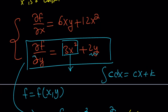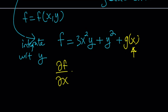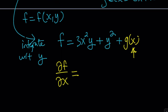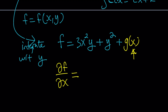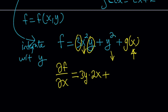So f of x, y equals 3x squared y plus y squared plus g of x. Now we need to find the actual f, so we don't know what g of x is — but we're going to find out. Pay attention to the first equation: it's the derivative of f with respect to x. Since we have f, we can differentiate it with respect to x and set it equal to what we have. Differentiating with respect to x: 3y is a constant, so the derivative of x squared is 2x, giving 3y times 2x which is 6xy. y squared is a constant with respect to x, so its derivative is 0. And the derivative of g of x is g prime of x.